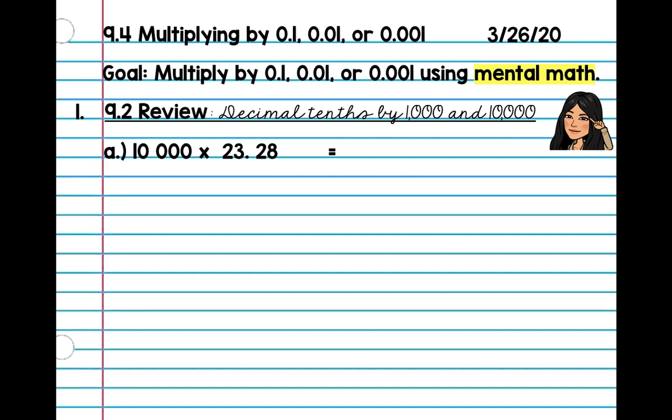Okay, go ahead. Alright, so let's look here. We're going to count how many zeros from the right. One, two, three, four. I'm going to do the same thing. One, two, three, four. Alright, so our answer is 232,800.